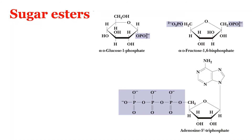Then, sugar esters. When an alcohol reacts with an acid, the resulting product is an ester. In the case of monosaccharides, the OH groups present — the alcoholic OH groups — when they react with an acid such as a COOH group, it results in the formation of an ester. When glucose reacts with phosphoric acid, we get glucose 1-phosphate or glucose 6-phosphate. Fructose yields fructose 6-phosphate and fructose 1,6-bisphosphate. ATP — adenosine triphosphate — is the energy currency of the cell; it consists of adenine, ribose, and three phosphate groups attached.